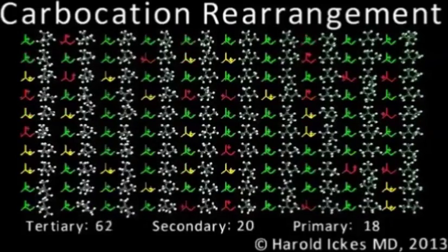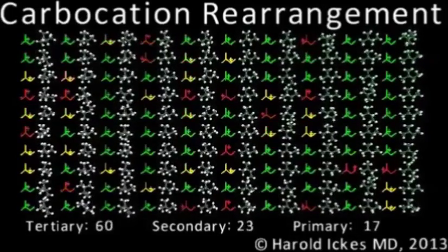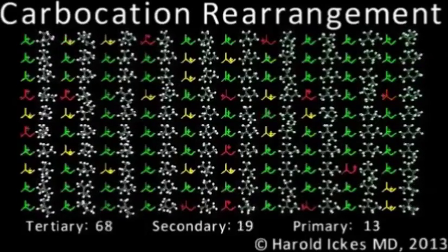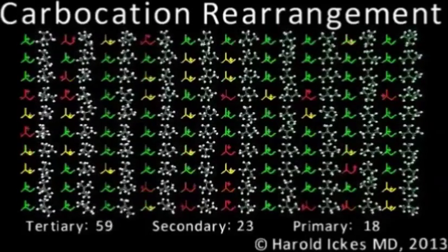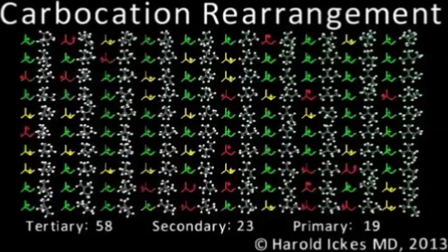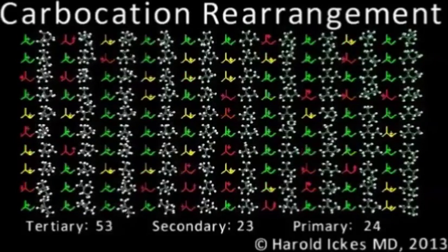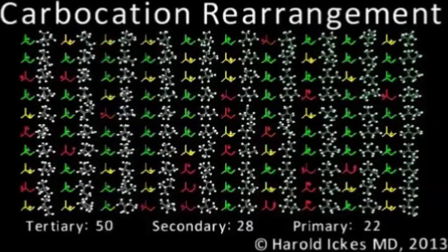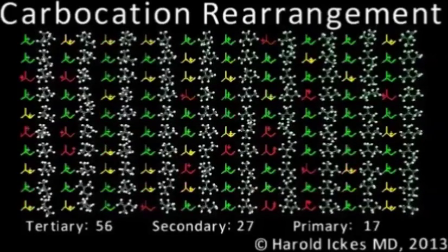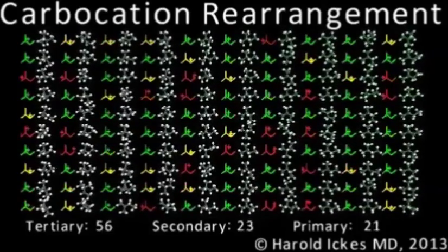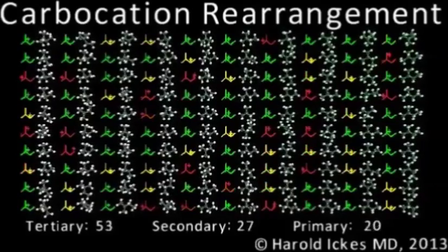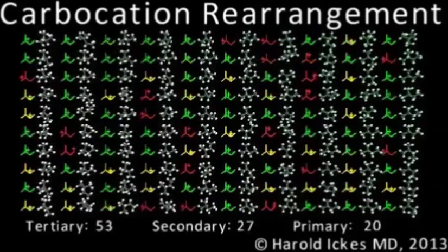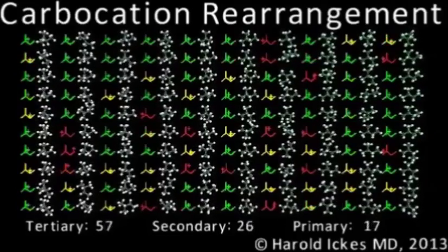At equilibrium, a disproportional number of molecules will be in the tertiary state. In this simulation, the equilibrium state gives somewhere between 50 and 60 percent as tertiary, denoted by the bottom left number. This does not necessarily represent the proportions that an actual solution of these molecules would adopt — it's merely the result of the current settings on my simulator. But it serves to outline the general principle that carbocation rearrangement tends to lead to tertiary carbocations.